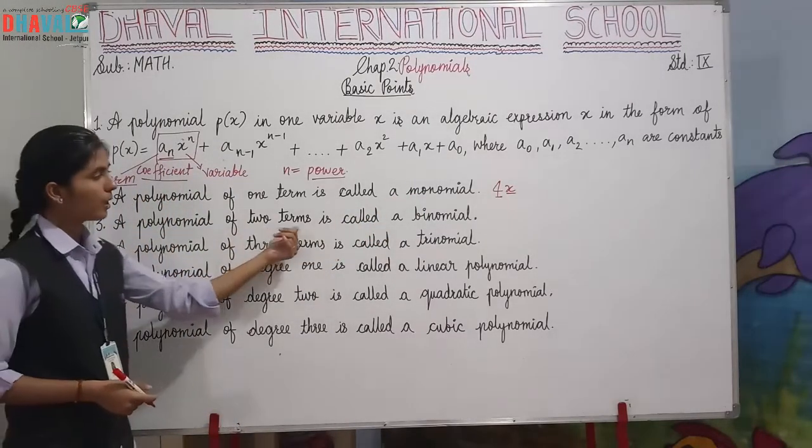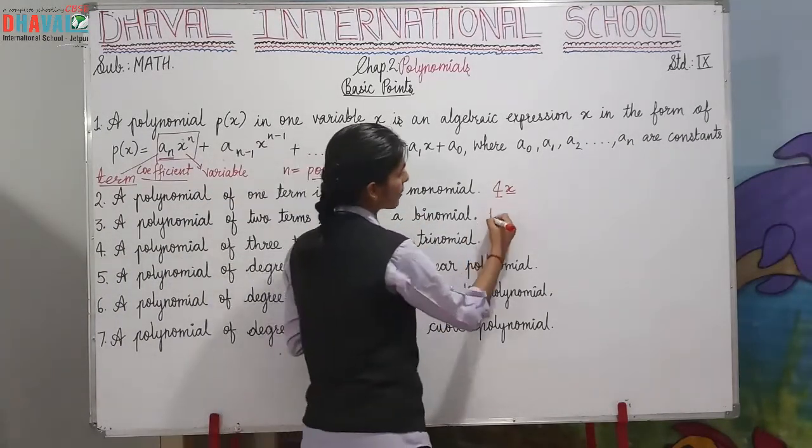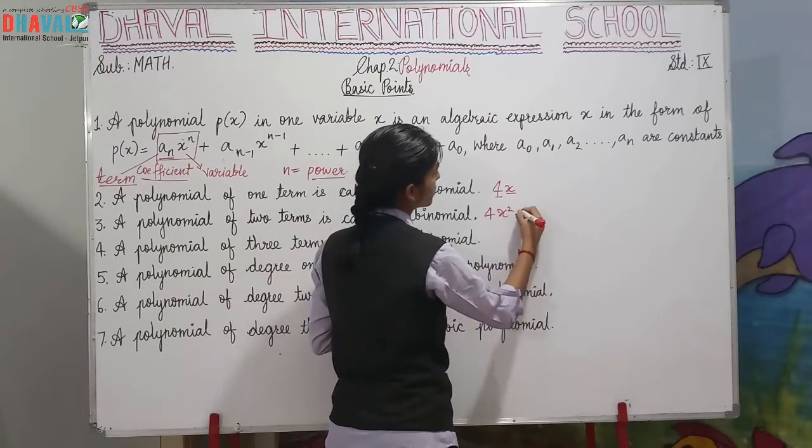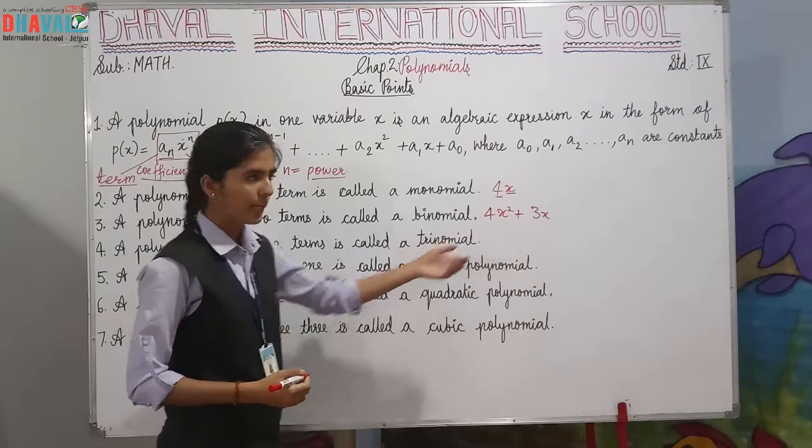A polynomial of two terms is called a binomial. For example, 4x squared plus 3x. So what do we call it? A binomial.